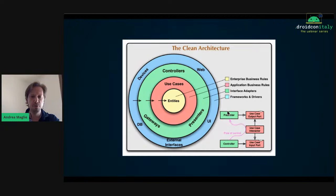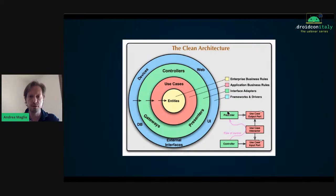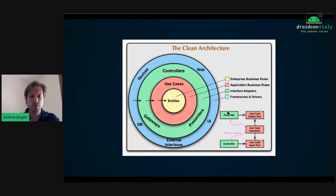This is the clean architecture diagram from the book. It's not so easy to read at first sight. We start from the inner circle — the entities circle — which contains entities, the models of our business rules. For example, if we're developing a restaurant search application, an entity could be the restaurant model. The next circle is use cases — operations we can apply on our entities. The next circle is the controller or presenter; if you're familiar with MVP, the presenter lies in the green circle.